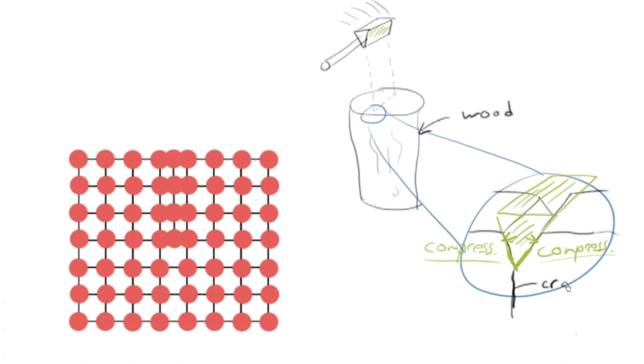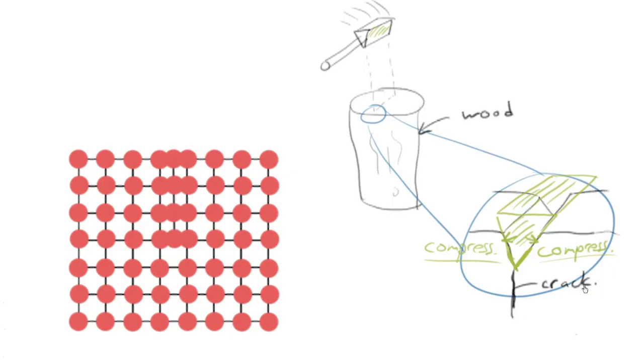And the crack actually advances down into the wood ahead of the blade. So that tells us, in fact, that the wood is being placed into tension.